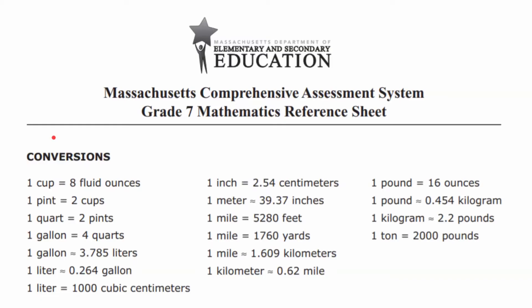The students that take this exam are given a reference sheet. They're allowed to refer to it during any part of the exam, any question that they have. The top half is the conversions. These are the conversions that the state of Massachusetts does not consider that a grade 7 student should know. It's something that they're allowed to look up and refer to.